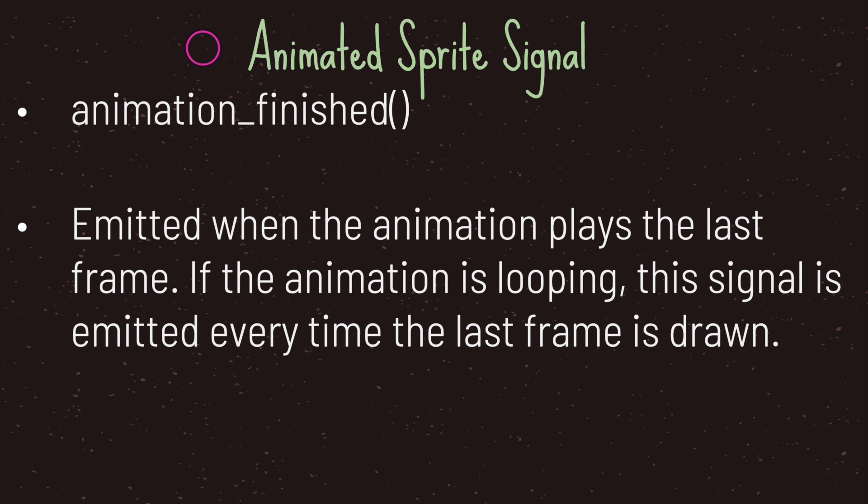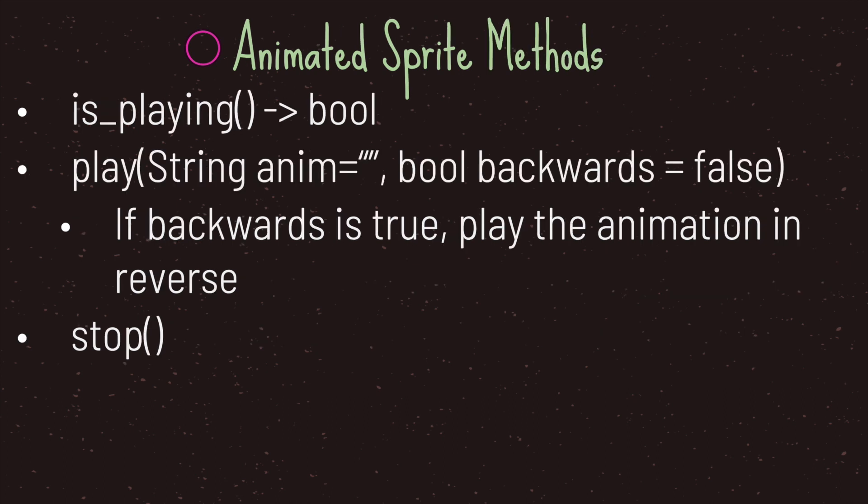In this episode we will not be taking a look at signals. The AnimatedSprite comes with three methods. The first method is called is_playing and it returns a Boolean value.